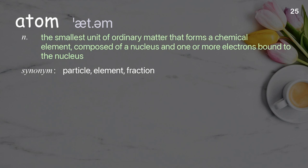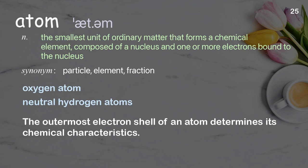Atom: The smallest unit of ordinary matter that forms a chemical element, composed of a nucleus and one or more electrons bound to the nucleus. Examples: Oxygen atom, Neutral hydrogen atoms. The outermost electron shell of an atom determines its chemical characteristics.